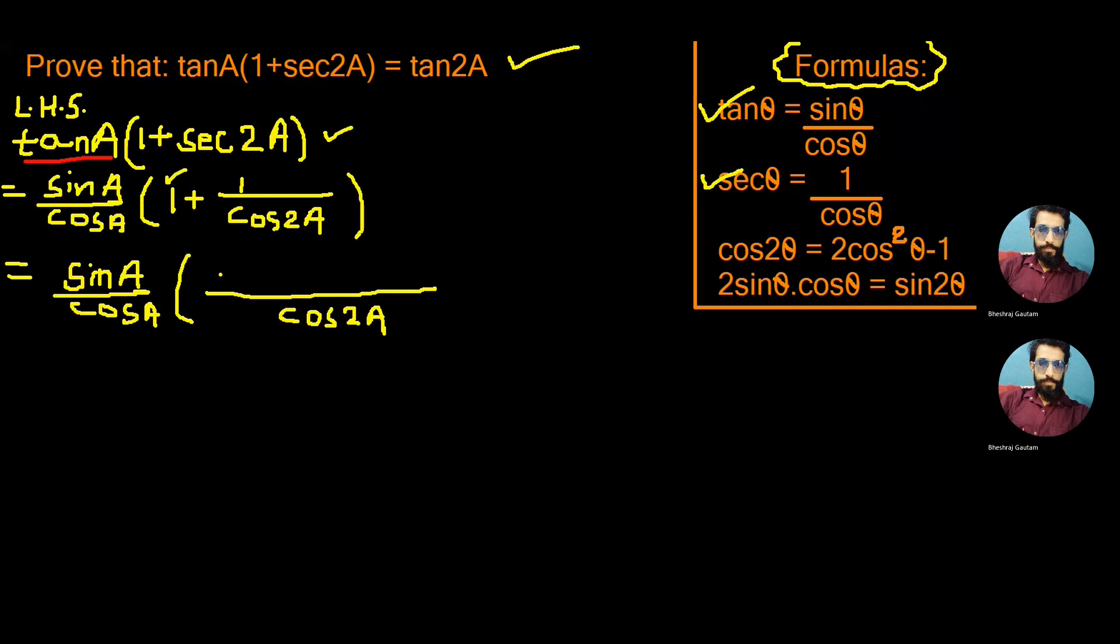When we multiply LCM with 1, we get 1 into cos² A as cos² A plus 1. Now we continue this step as sin A by cos A and changing this cos² A as formula cos 2θ is equal to 2 cos² θ minus 1.